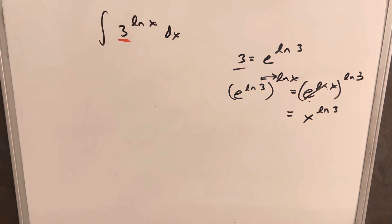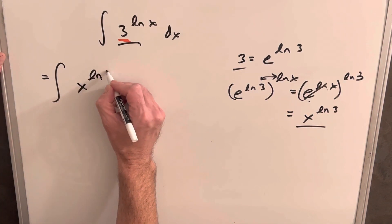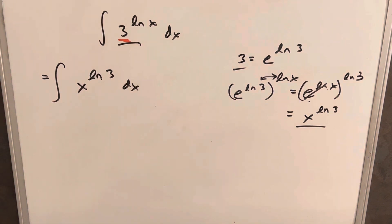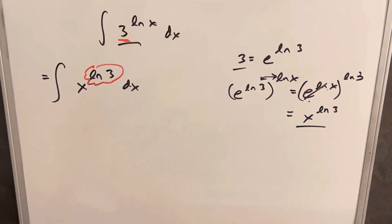Good. So then what we're going to do is we're going to rewrite our whole integral like this. So we're going to have the integral of x to the ln 3 dx. The important thing to notice now, what we've done is this is just a number. So now we can just use the power rule on this, and it's going to be pretty easy to finish.